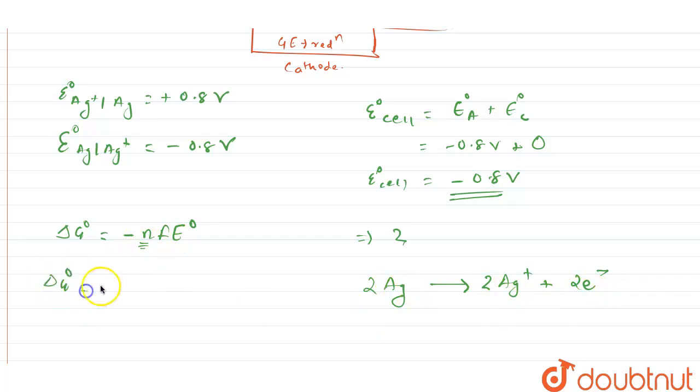We can say that ΔG° is equal to -2 × F value we know 96,500 × E°, that is -0.8. Once we do the calculation, we are going to get the value for ΔG° is equal to 154,400 joules.